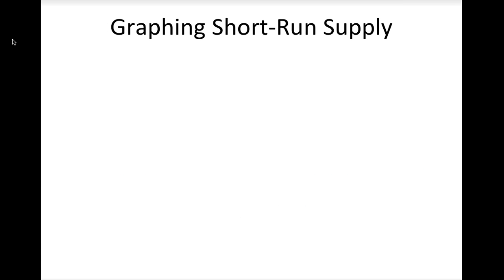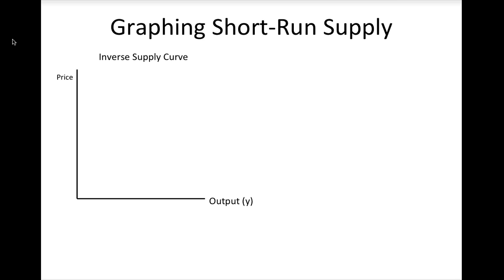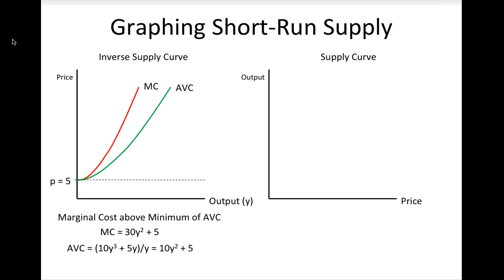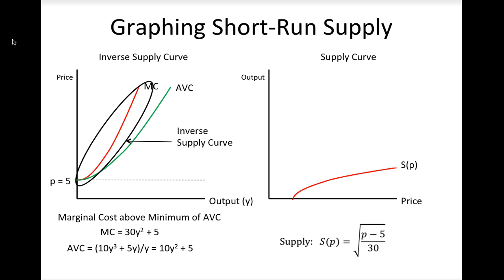We can now graph both the short-run supply function and the short-run inverse supply function. Note that if we put price on the vertical axis and output on the horizontal axis, we are graphing the inverse supply curve; if we reverse the axes, we are graphing the supply curve. The inverse supply curve is the portion of the marginal cost curve above the minimum of average variable cost. In the case of these cost functions, both the marginal cost and average variable cost functions are parabolas whose minimum value occurs at an output of 0 and a price of 5. Thus, the firm's inverse supply curve is the portion of the marginal cost curve to the right of the vertical axis. The supply curve graphs quantity supplied as a function of price — the square root of (P − 5) / 30 — and is only valid for prices greater than 5.